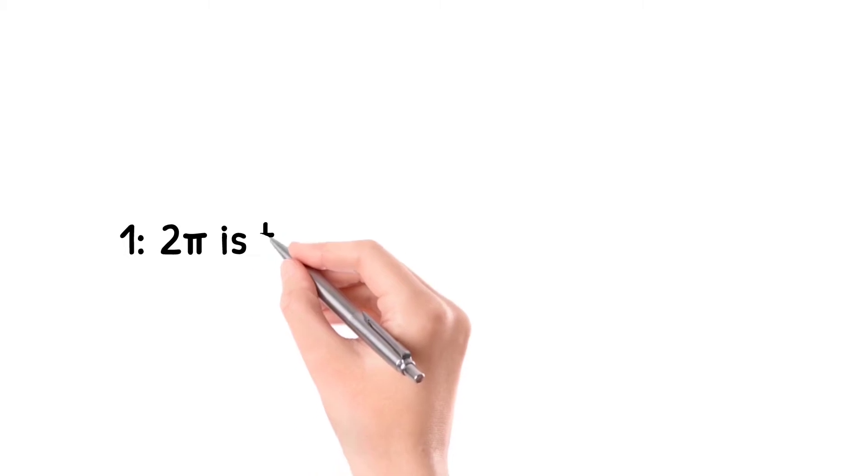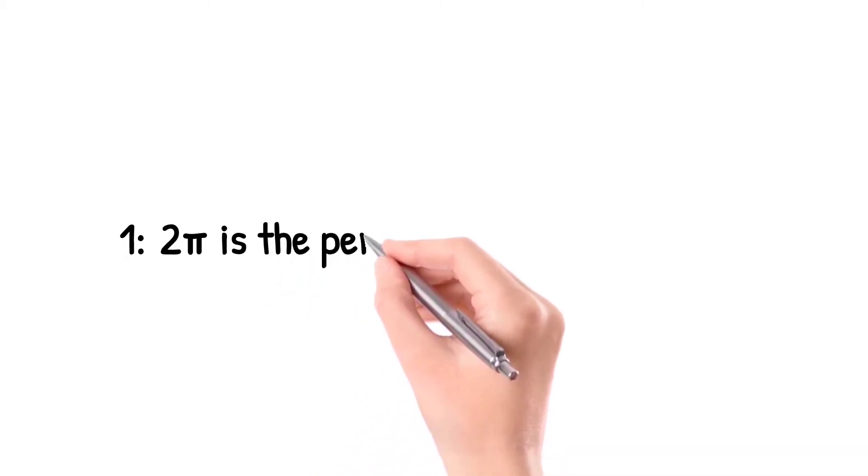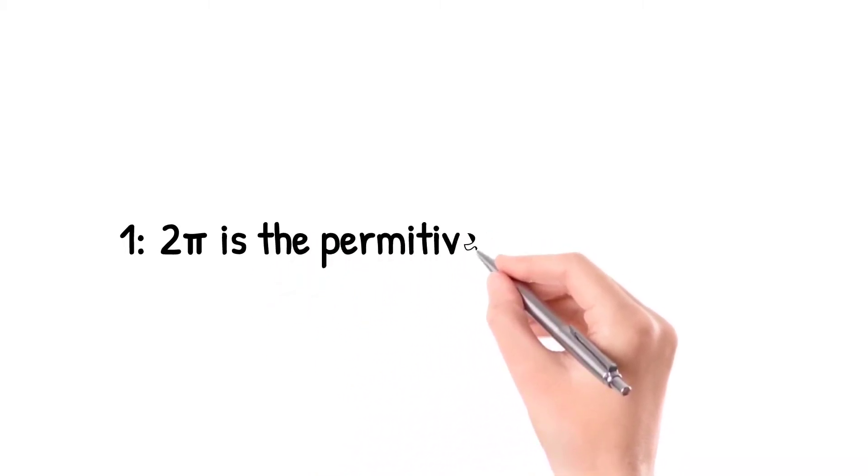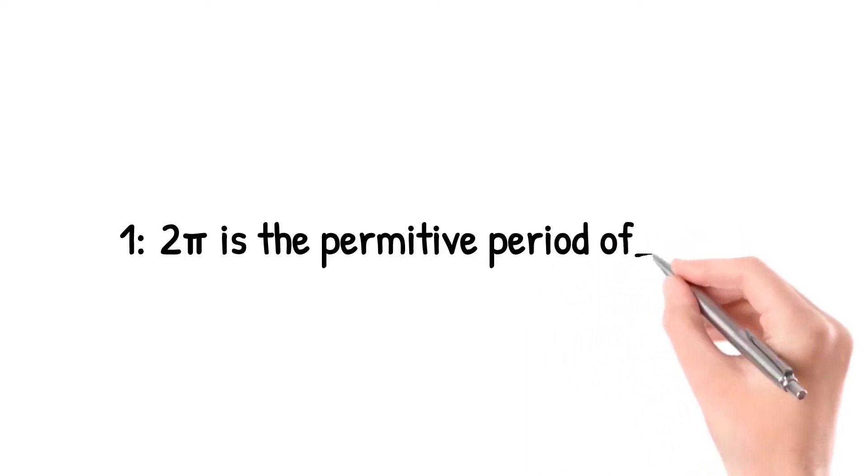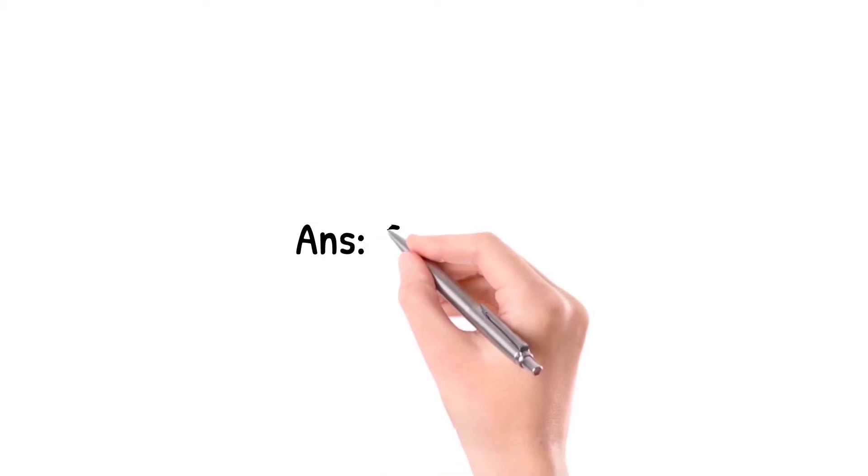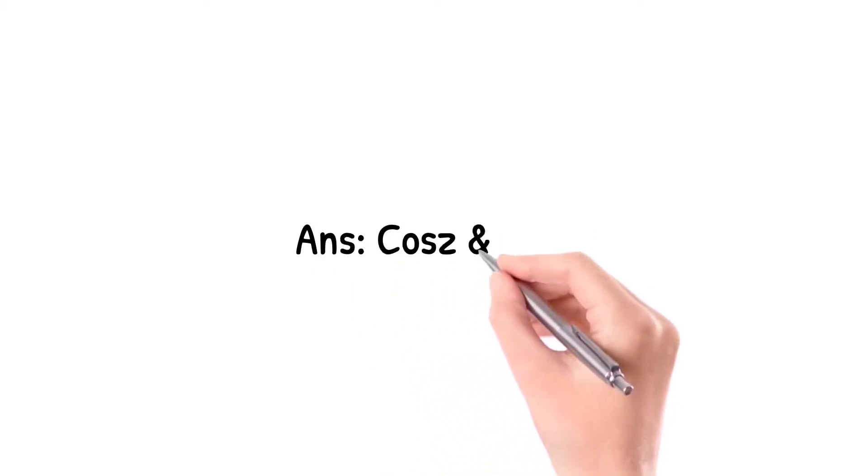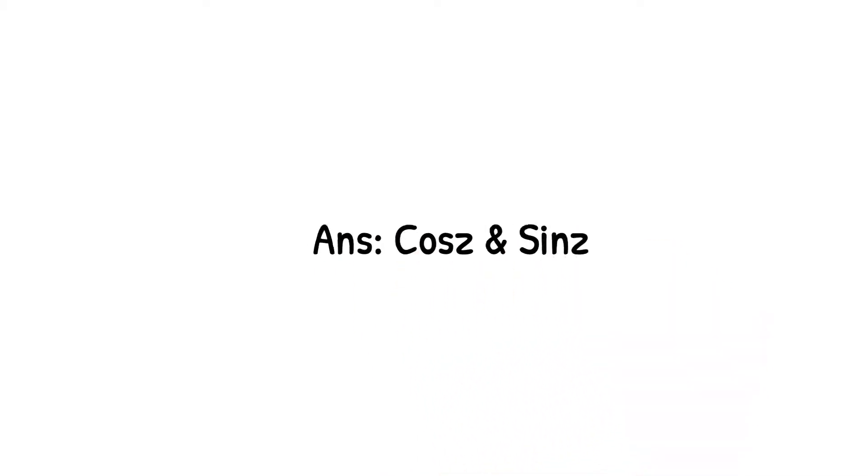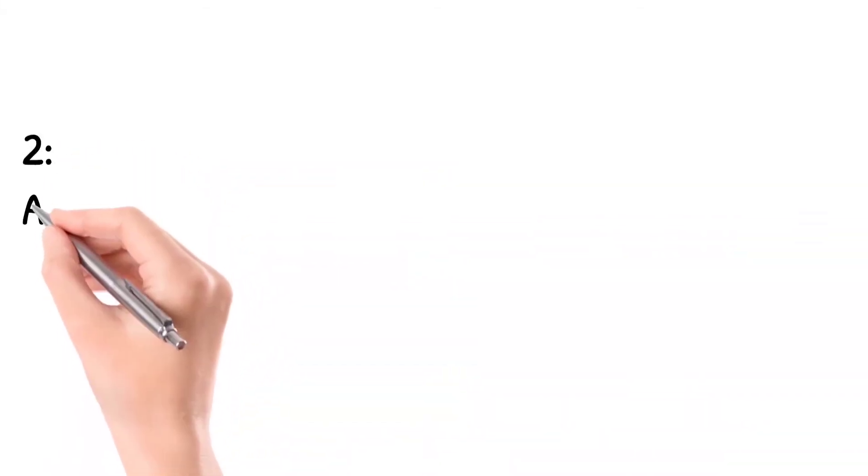Question number 1: 2 pi is the primitive period of? Answer is cos z and sin z. Question number 2.